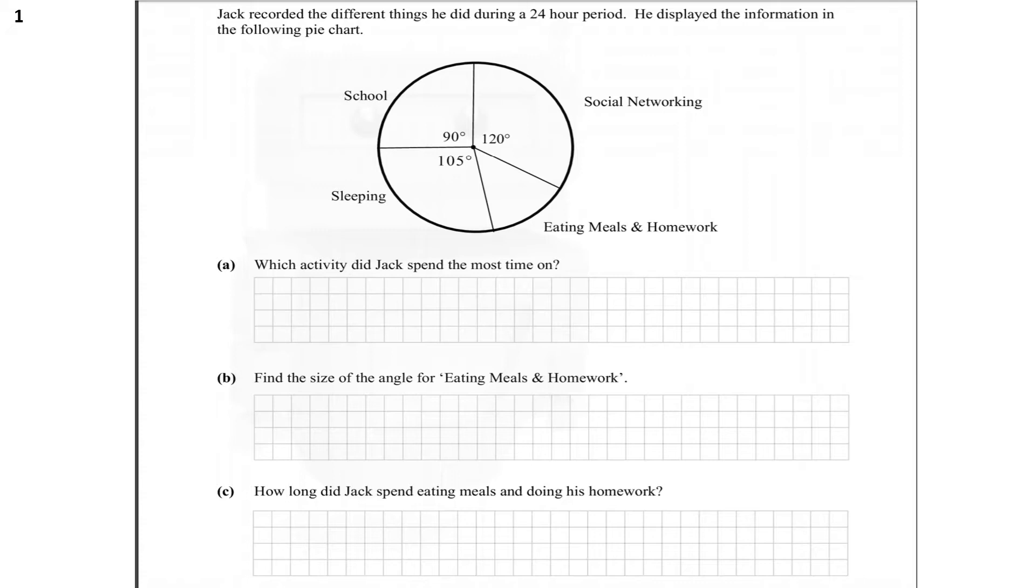Jack recorded the different things he did during a 24-hour period. He displayed the information in the following pie chart. So we can see the pie chart is made up of four slices. Part A asks us what activity did Jack spend the most time on? We can see the greatest slice of the pie or the greatest sector is social networking.